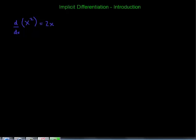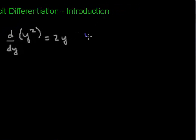Now if we had, for instance, an expression y squared, and we wanted to find the derivative of y squared — now instead of with respect to x but with respect to y — it's the same basic principle. We're taking the derivative of this expression with respect to y. The variables match up, so we just use ordinary differentiation. Both of these are examples of what we call explicit differentiation, or just the ordinary derivatives.